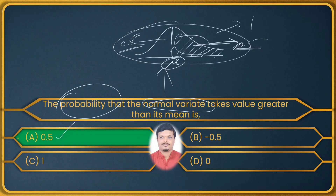Note that minus 0.5 is also given as an option, but probability cannot be negative since the range of probability is 0 to 1. So that negative option is invalid. The correct answer is 0.5.